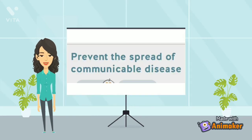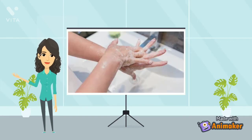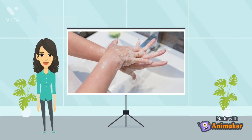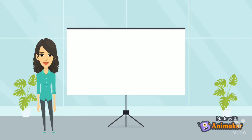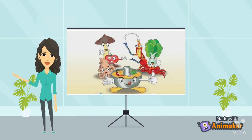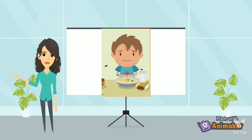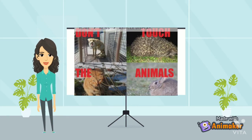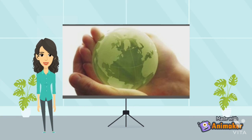An important thing to know is how to protect yourself from being infected by these diseases. Wash your hands thoroughly and regularly, keeping your surroundings clean, practicing good hygiene when preparing and handling food, avoid eating spoiled food, and avoid touching wild animals. Following these steps and creating awareness about communicable diseases can protect you, your family, and the whole world.